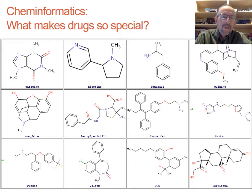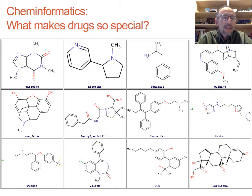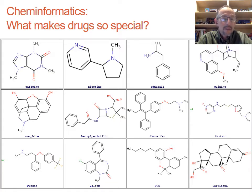Let's look at a few drugs to think about why Cheminformatics may help us — what makes these drugs so special. We have some familiar compounds: caffeine, nicotine in tobacco, morphine (a strong painkiller, an opiate), tamoxifen (a cancer drug), benzylpenicillin (an antibiotic which has saved countless lives), Prozac (an antidepressant), valium (a tranquilizer), and so on.